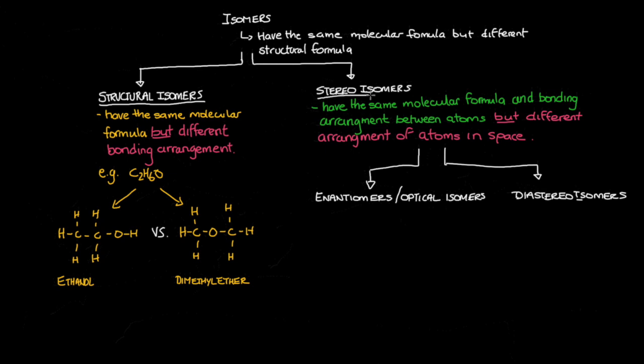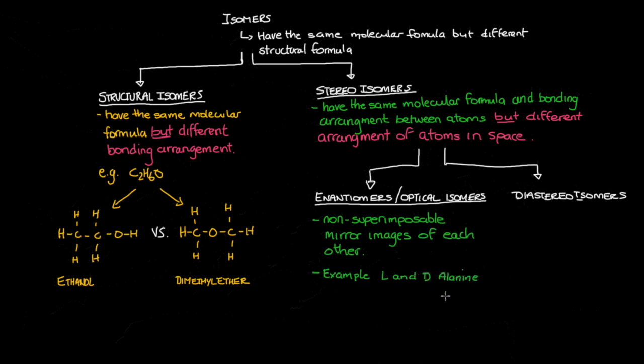This particular class of isomer, known as an enantiomer or optical isomer, represents non-superimposable mirror images of a particular molecule. A good example is the amino acid alanine. Alanine here is represented with its two mirror images, one on the left and one on the right. Let's look at this a little bit deeper, so that you can see what the differences are between both.